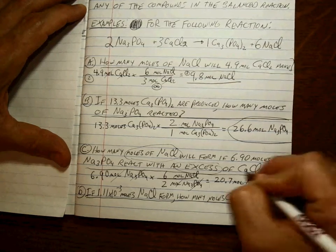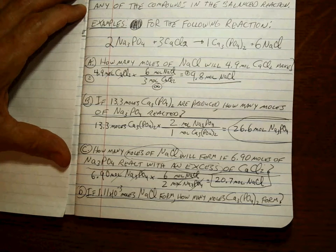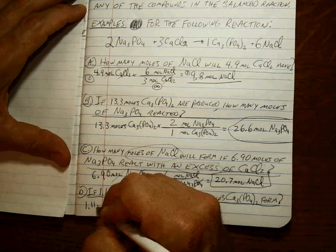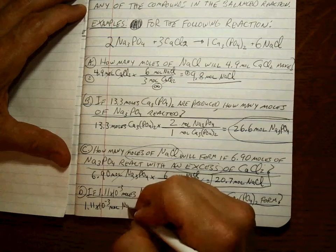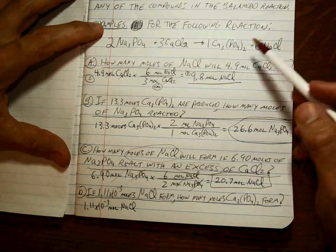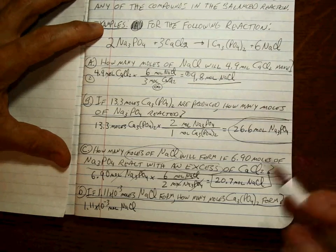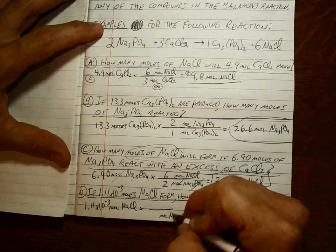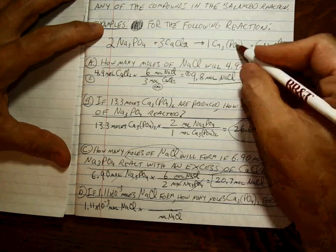Okay, final problem: 1.11 times 10 to the minus third moles of what? Moles of the NaCl. So this time we're comparing product with product, but it's still nothing more than a mole-to-mole ratio. You just have to know what has to go in the denominator and the numerator to cancel out the units to get what you want.